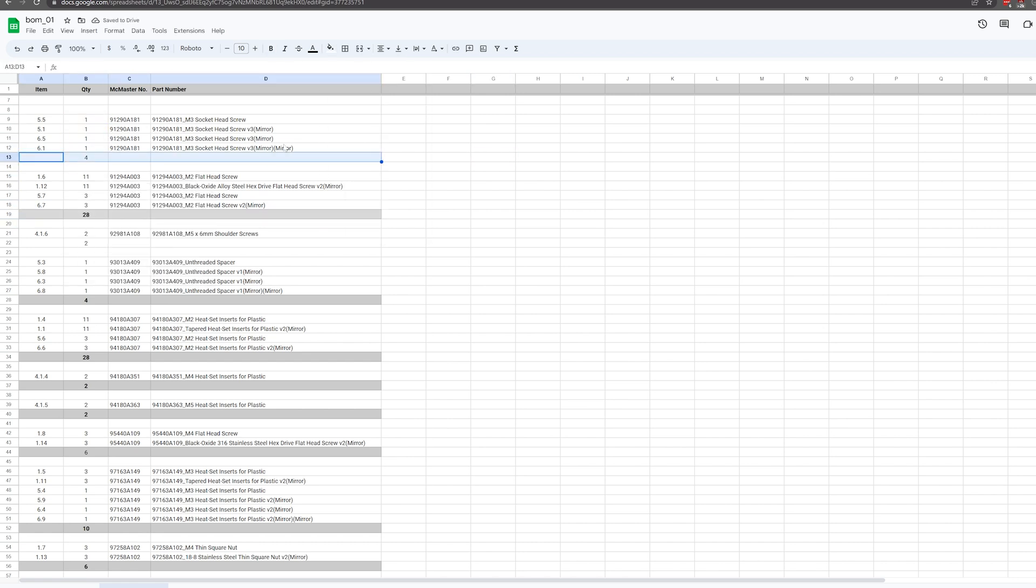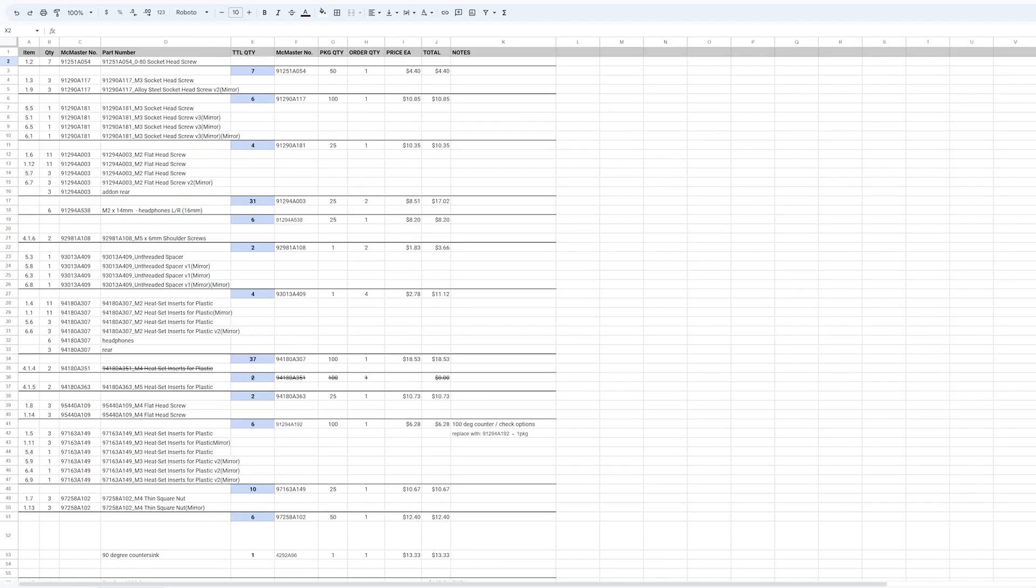There are some ways to streamline and automate this, but there's only like 12 line items here, so once everything's sorted and counted, I can just do the orders by hand. But yeah, otherwise that handles all the basic hardware needed for the project.